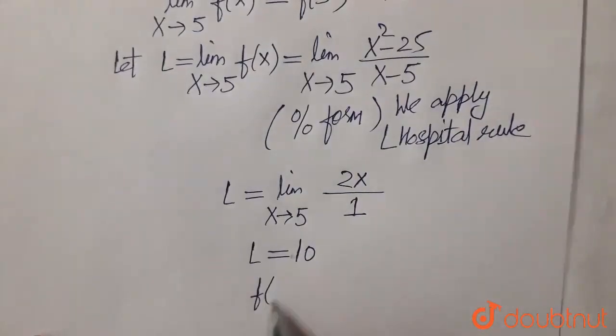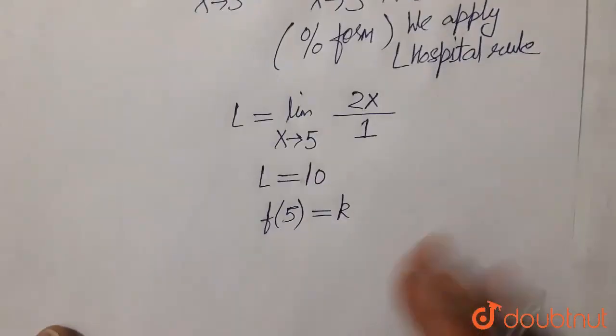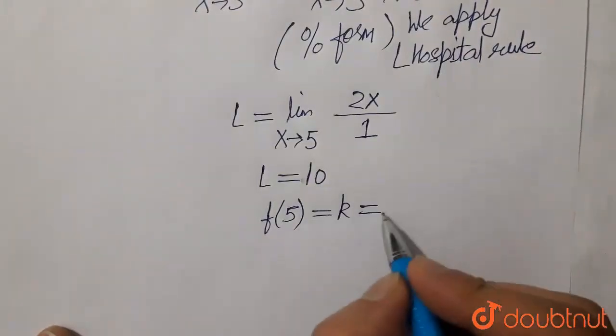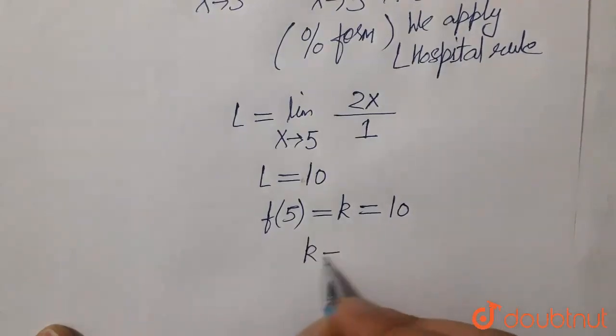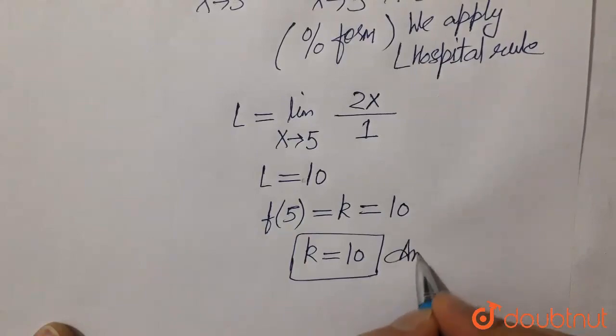So f(5) equals k equals the value of the limit, which is 10. The final answer is k equals 10.